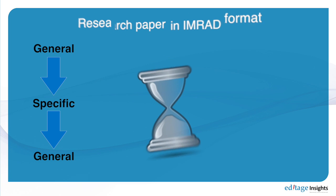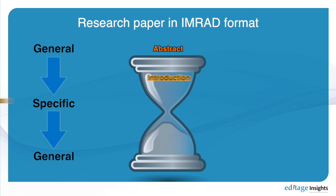So the general, specific, general structure — this structure holds for a journal paper. This organization helps you become a better writer.